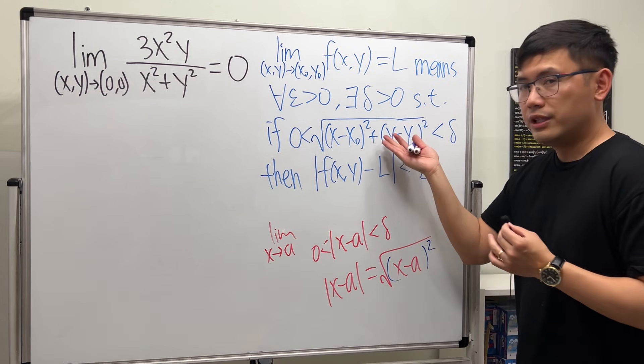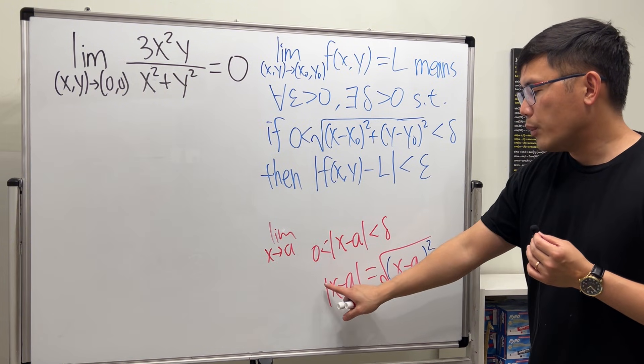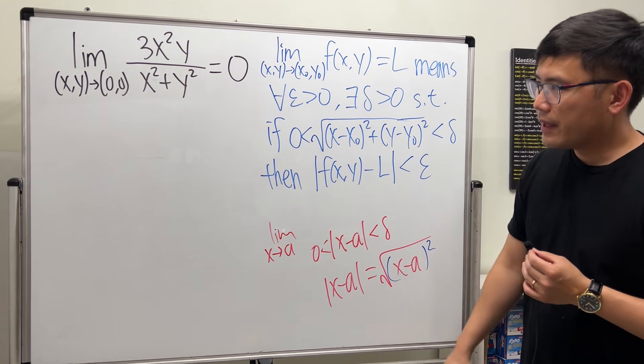So it's really the same as this right here, yeah? And then this right here will come in handy, how we rewrite the absolute value in terms of a square root and then a square. So now, let's get back to here.